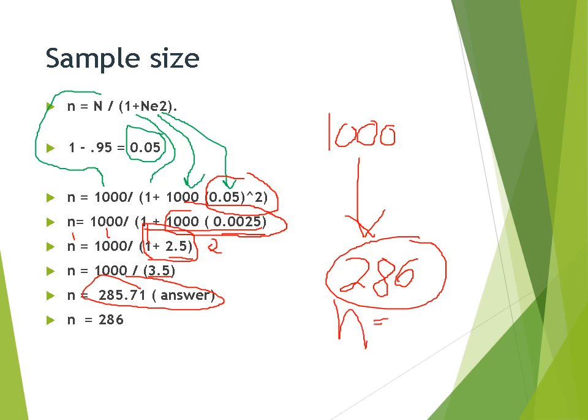So if you want to research, if you have a total population of 1,000, so you need a sample size of 286. You may want to divide this by 2 in order to have a stratified. You can get male 143 and female is 143. So this is how you are going to apply Slovin's formula in order to get your sample size.